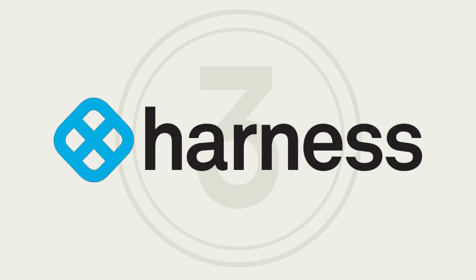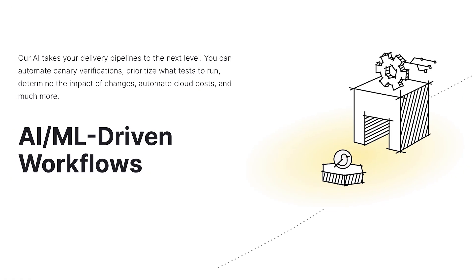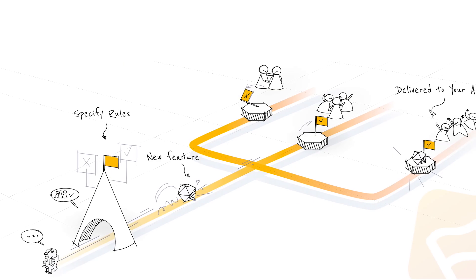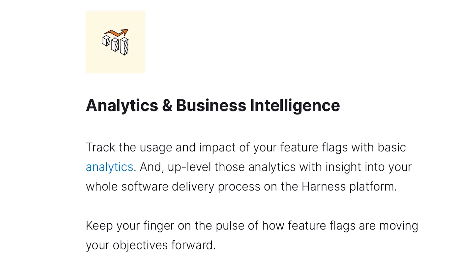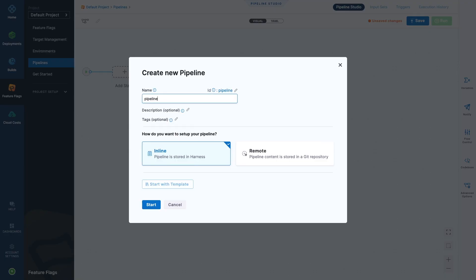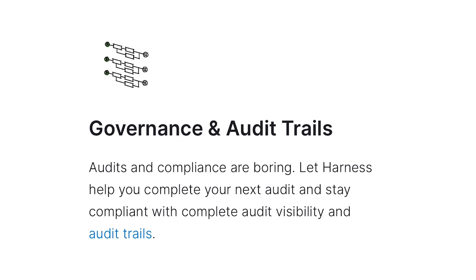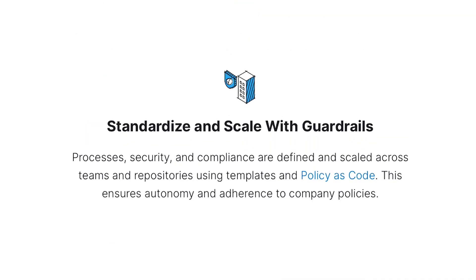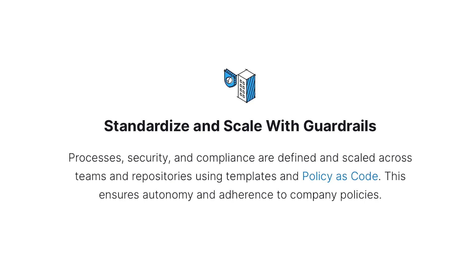Third is Harness. Harness is a software delivery platform that uses AI to simplify DevOps processes. The feature flag module provides user targeting and offers basic analytics to track the impact of your features. Harness shines in the automation of deployment workflows and control around software delivery governance. It has automated policy and guardrails to keep teams compliant with open policy agents.